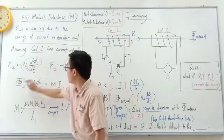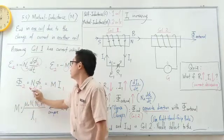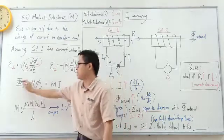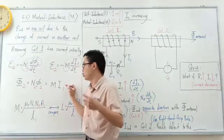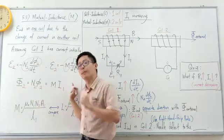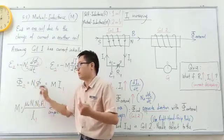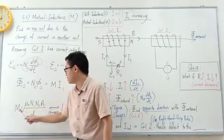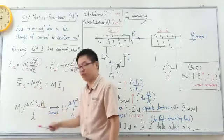We get another formula: N times small phi equals big phi — magnetic flux linkage. So, N2 times flux 2 equals M times I1. This is used to find the magnetic flux linkage at any given time. For example, if the current in coil one is 2 amperes, we can find the magnetic flux received by coil two at that moment. Another formula for mutual inductance from derivation is: M equals mu-naught times N1 times N2 times A1 over L1.